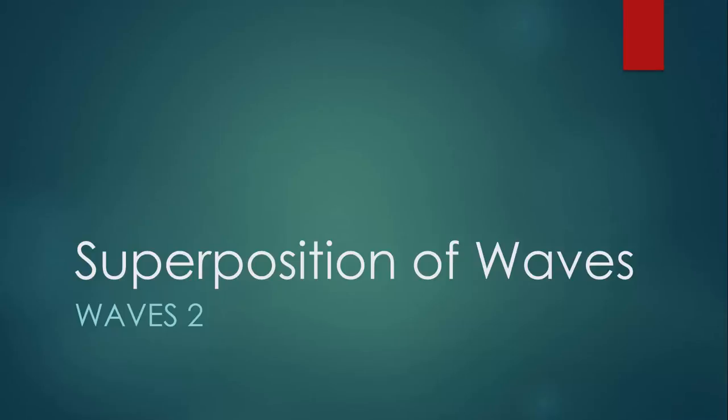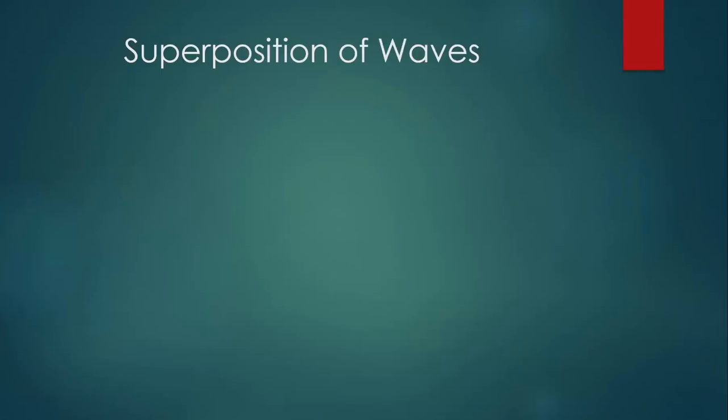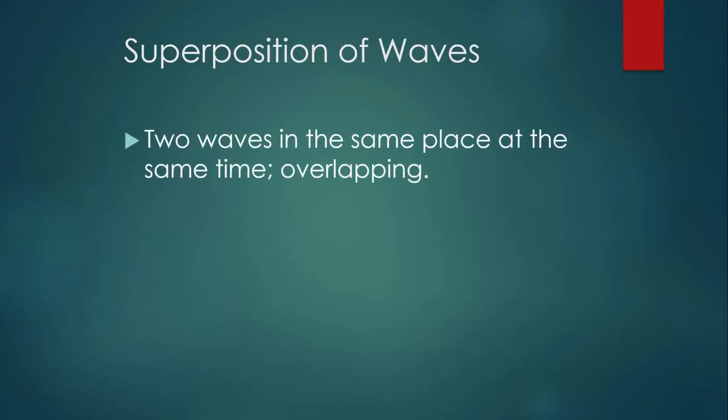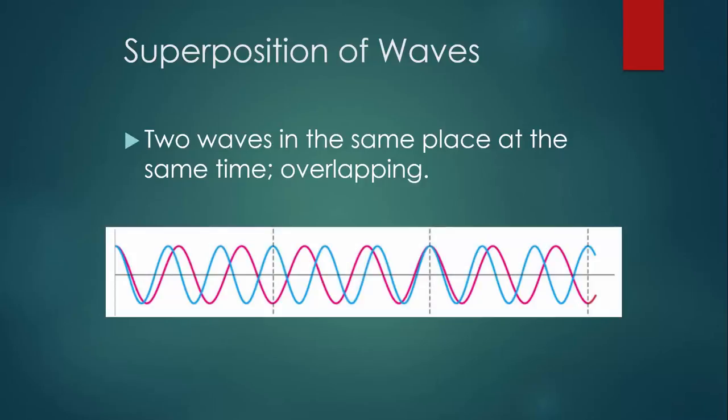This lesson is about the superposition of waves. Superposition of waves means that there are two waves in the same place at the same time — they're overlapping, like the pink wave and the blue wave here. In this lesson, we'll talk about a few phenomena that occur when two waves are superimposed.